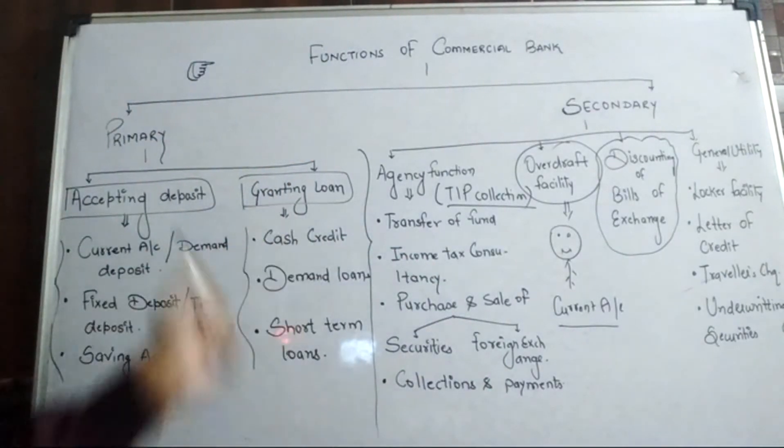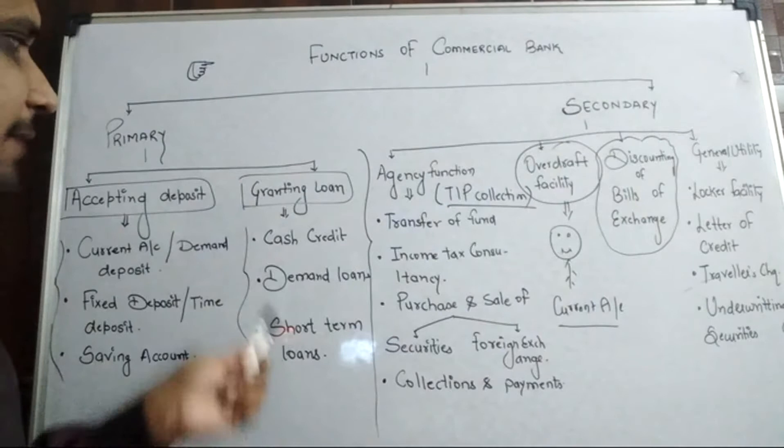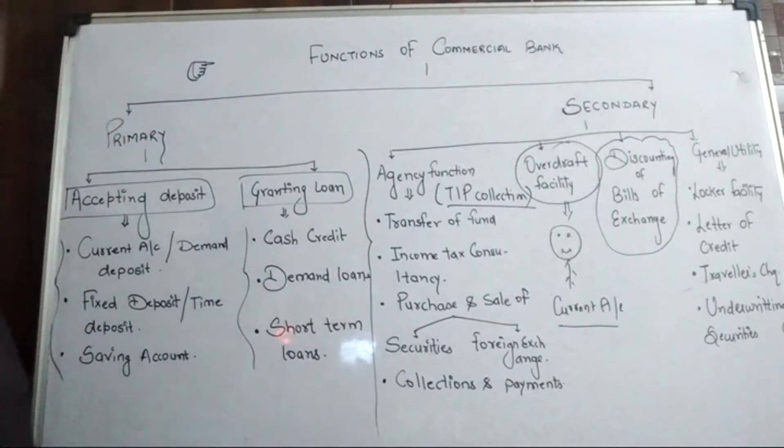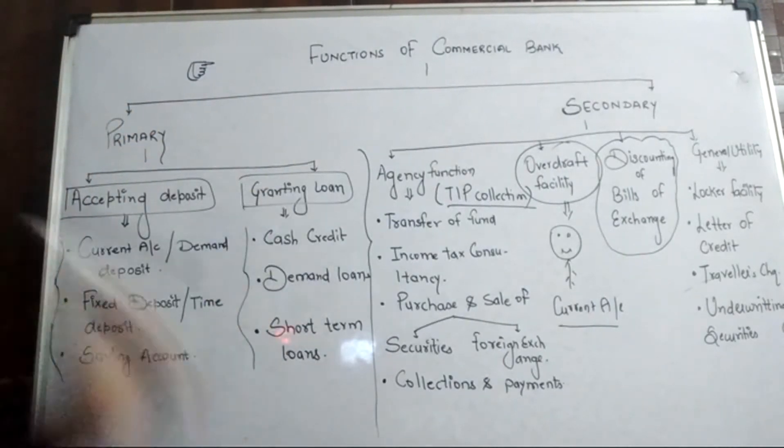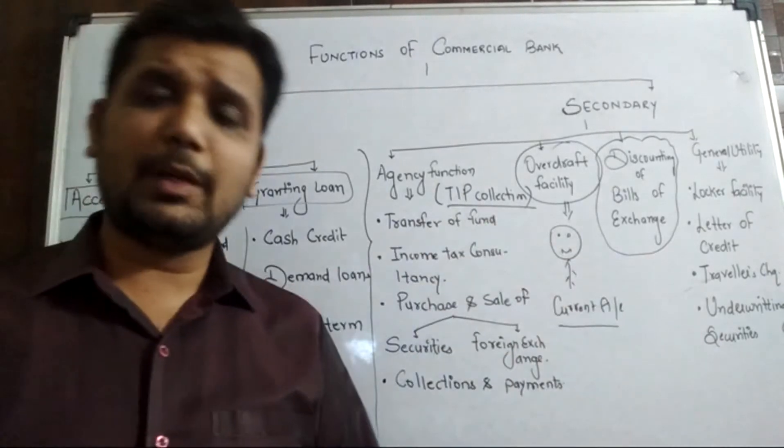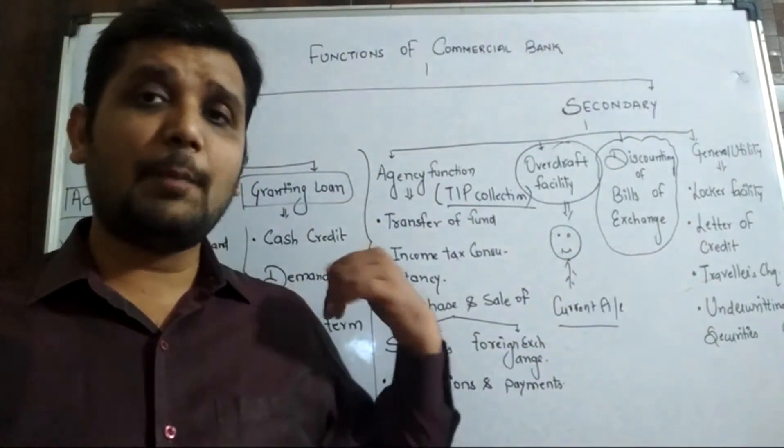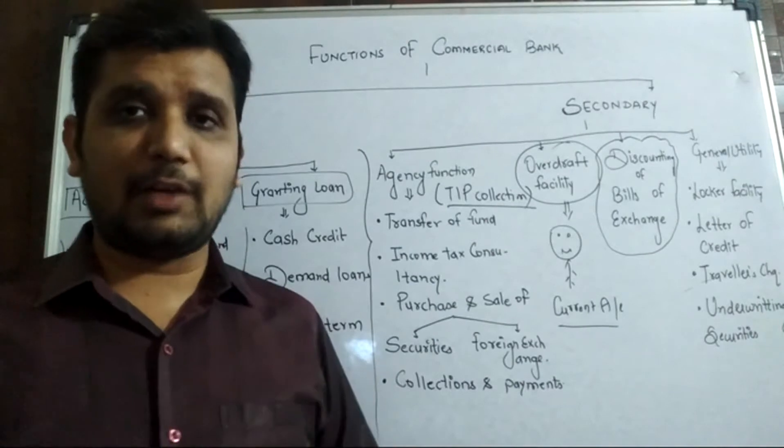Granting loans is again in three parts: cash payment, demand loan, and short term loan. This much part we have done. In part two, we discussed this. Now today we will just focus on secondary function of commercial bank.